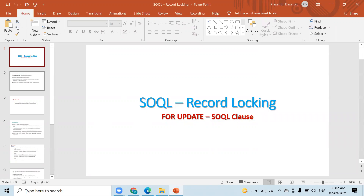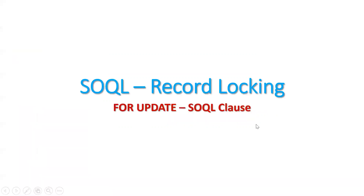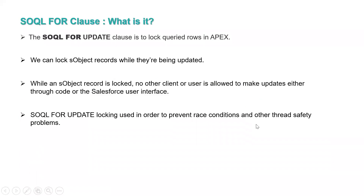Today we are covering SOQL record locking using the FOR UPDATE clause. The SOQL FOR UPDATE clause is used to lock queried rows in Apex. We can write this clause along with the query.